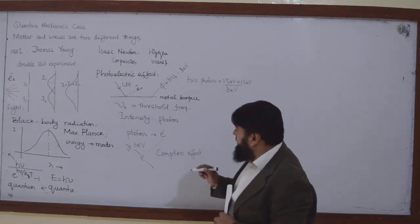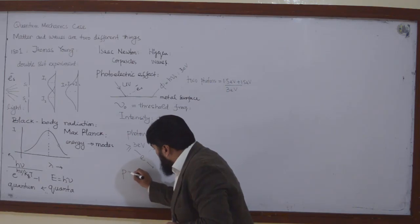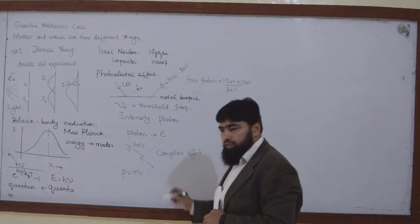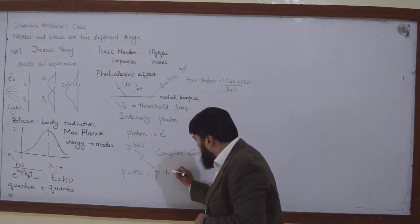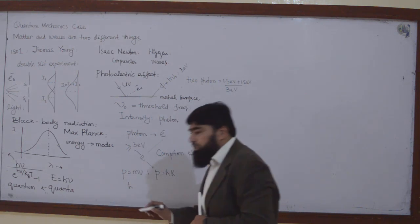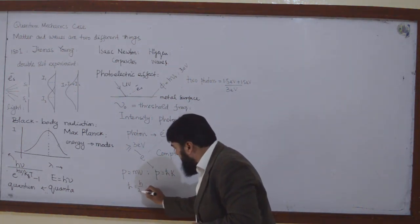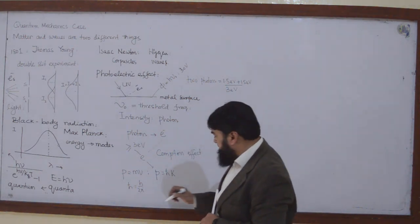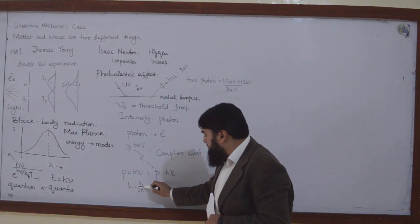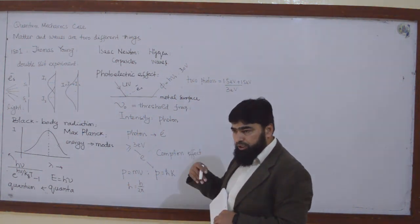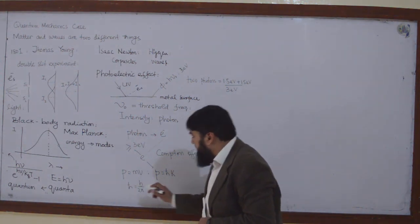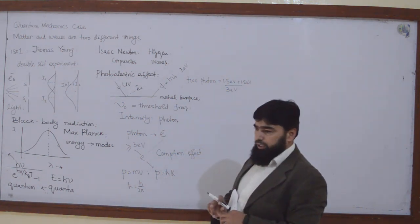For a classical body, momentum is mv. But what is the momentum for a wave? The momentum for a wave is ℏk. This is not H — this is H-bar. H-bar is called the reduced Planck constant and it is equal to H over 2π. The 2π represents the complete circular angle, making it consistent between circular and linear geometry.